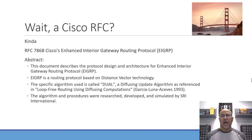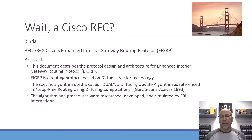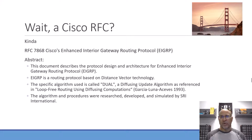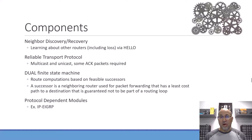The algorithm behind convergence is the diffusing update algorithm, or DUAL, based on a paper written by Garcia-Luna-Aceves titled "Loop Free Routing Using Diffusing Computations." We're going to cover a lot of the operational components of EIGRP and certainly the message types.